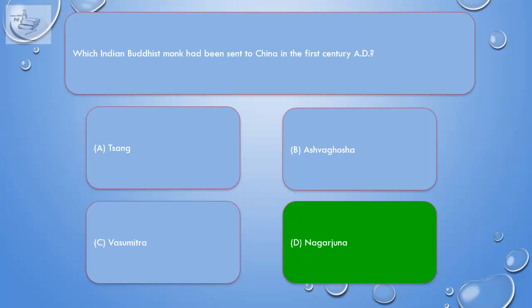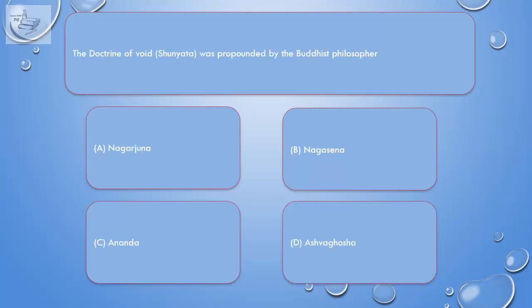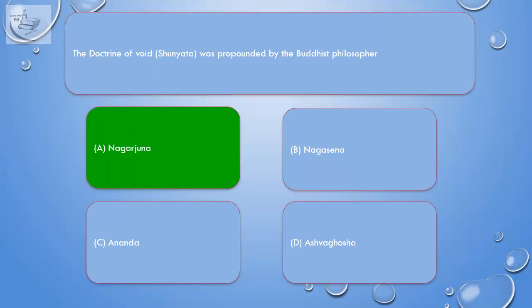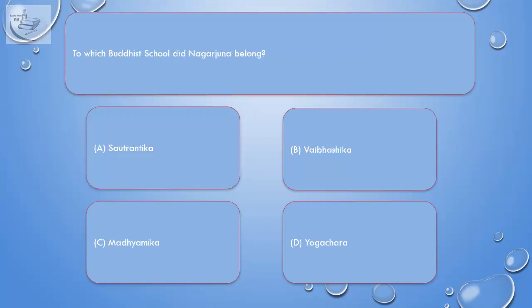Question. The doctrine of Void, Shunyata, was propounded by the Buddhist philosopher — A. Nagarjuna. B. Nagasena. C. Ananda. D. Ashwagosha. Correct answer is A. Nagarjuna.